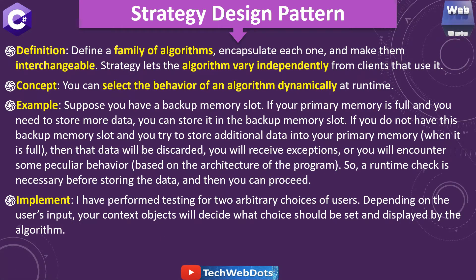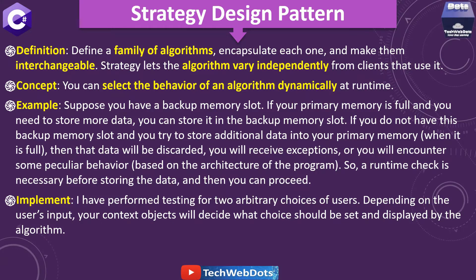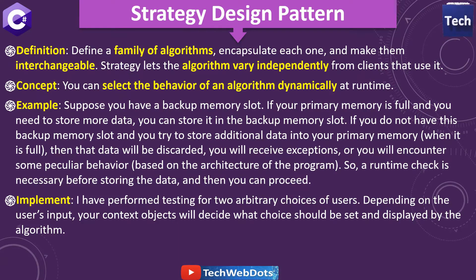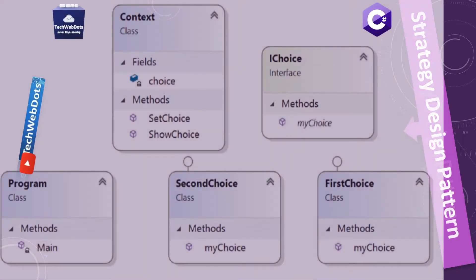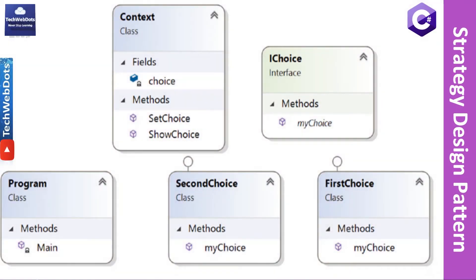That's the actual scenario that really happens in enterprise-level applications. In the code example, I have performed testing for two arbitrary user choices. Depending on the user input, the context object will decide what choice should be set and displayed by the algorithm. Before that, let's have a look at the class diagram.